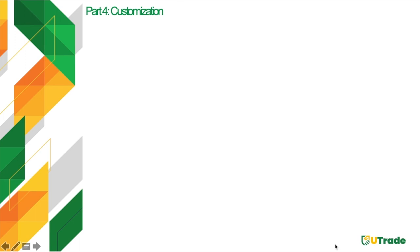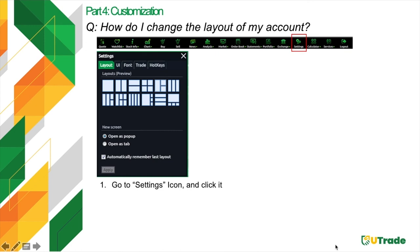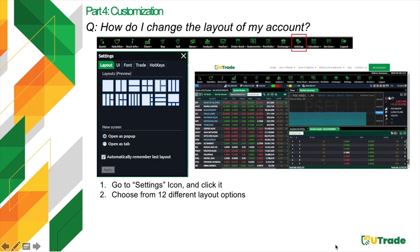Moving on to part 4 — customization. The following slides will walk you through basic customization of your online account, starting with the layout of your trading hall. Go to the Settings icon and click it. Under the Layout tab, choose from 12 different layout options — 1 window, 2 window, or up to 5 window layouts. By default, your trading hall has a 3-window layout. You can also choose between opening a new screen as a pop-up or as a new tab. Click Apply to save your changes.